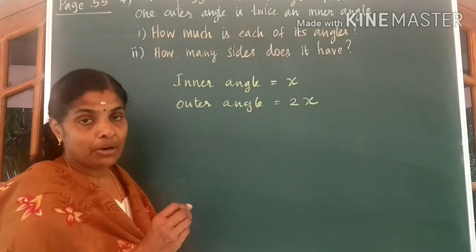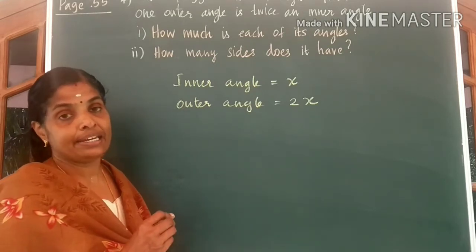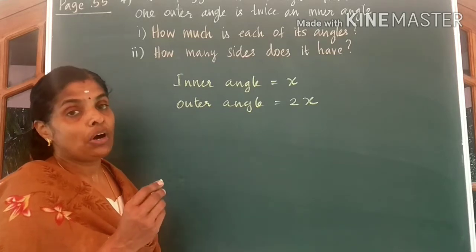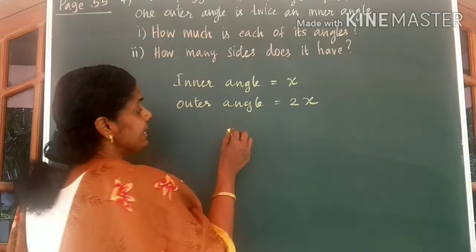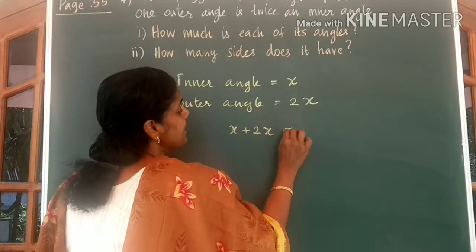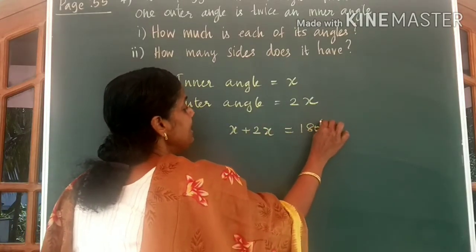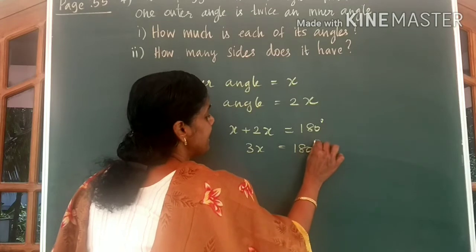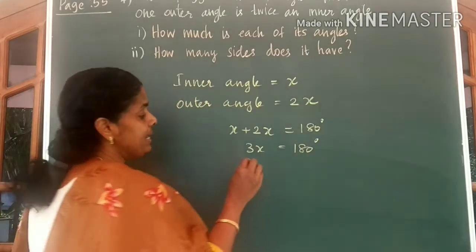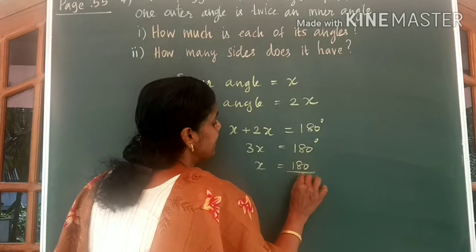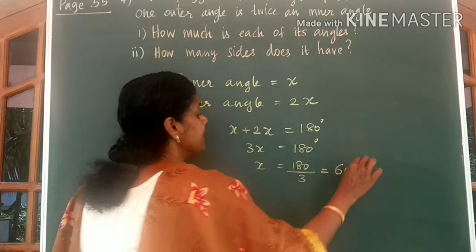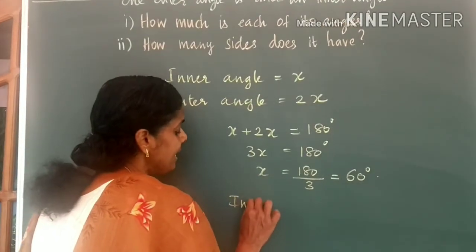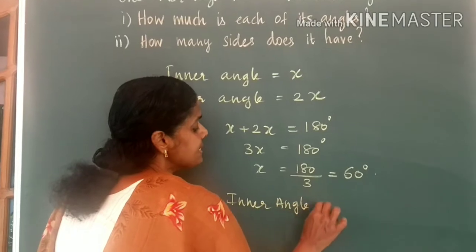What do you know? In a polygon, if all sides are extended, the inner angle plus outer angle at each vertex forms a linear pair. So we can write x plus 2x is equal to 180 degrees. From this, we get 3x is equal to 180 degrees, or x is equal to 180 divided by 3, which is equal to 60 degrees. From this, we get each inner angle to be equal to 60 degrees.